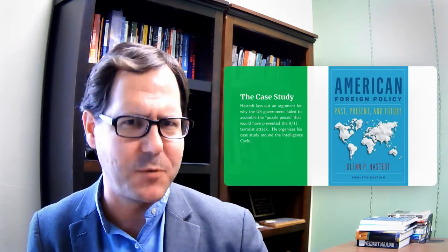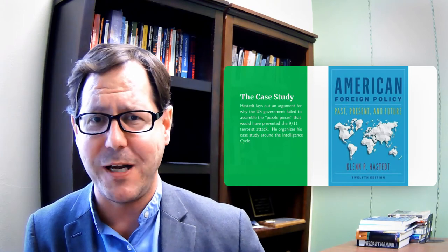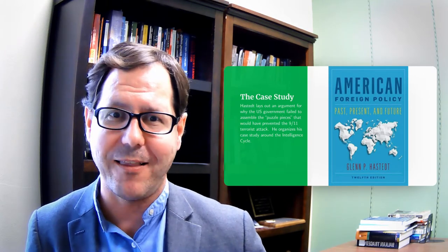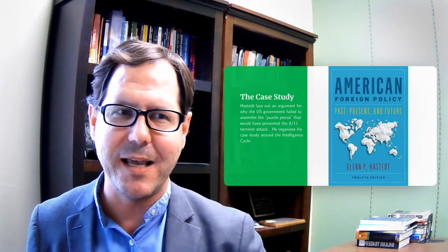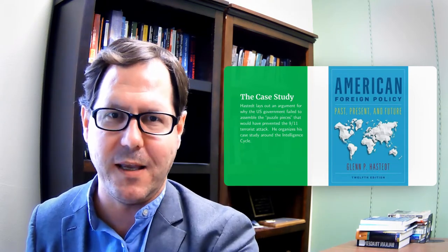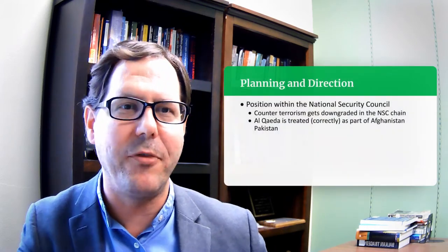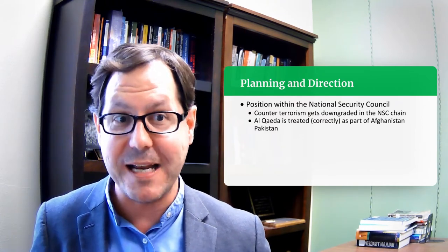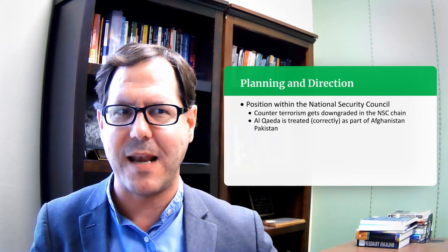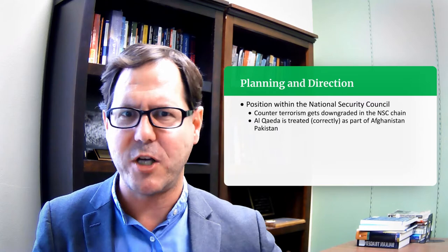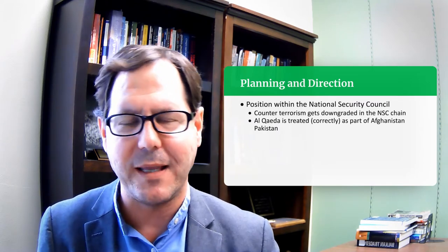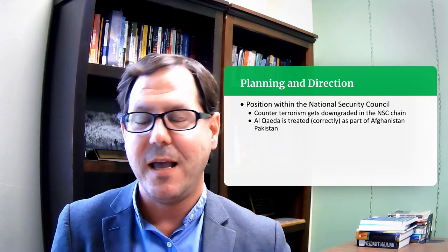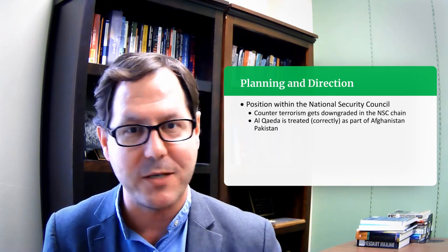I should flag that Hastedt comes off as fairly critical of both the intelligence community and of the Bush administration following the September 11th attacks in this case study. Looking at the planning and direction piece, Hastedt notes that counterterrorism — specifically Al-Qaeda — gets downgraded in terms of where it falls within the National Security Council reporting chain. There's no longer a terrorism person directly in the meetings; they're reporting to other people, which means that's less likely to be a priority for different agencies.